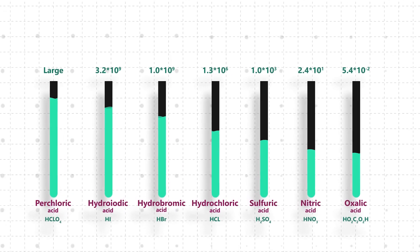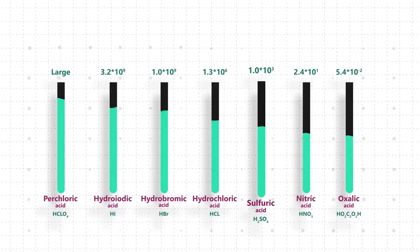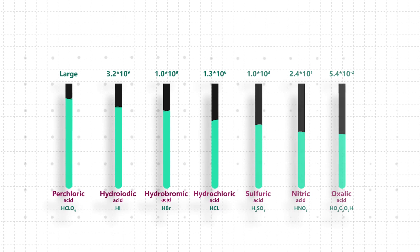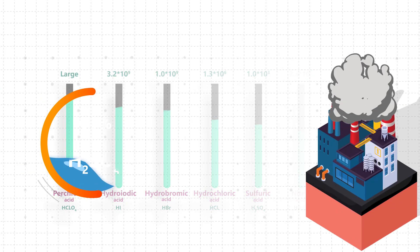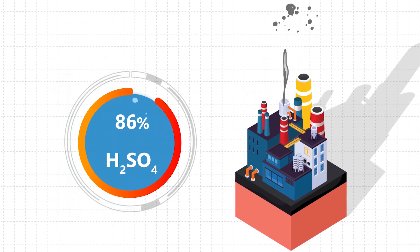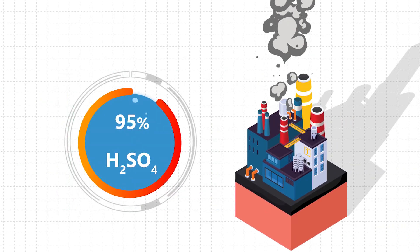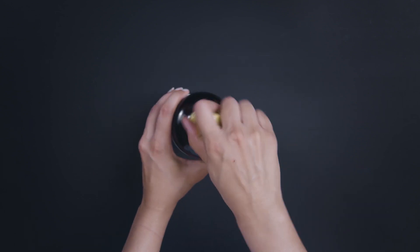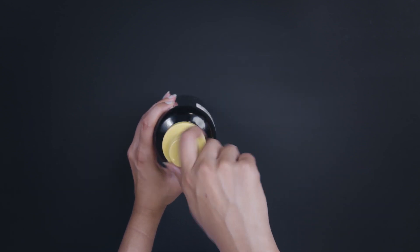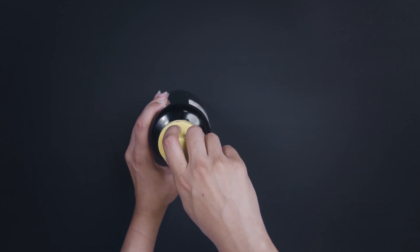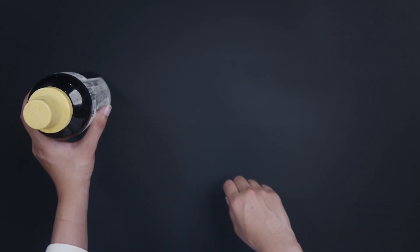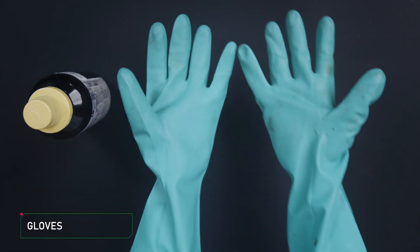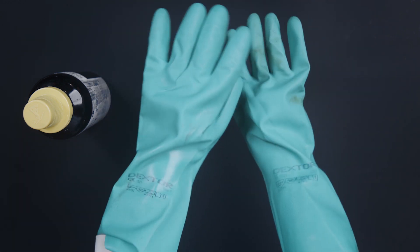So why is sulfuric acid called the king of acids when there are far more powerful acids? It's because sulfuric acid is produced in large quantities and almost every manufactured item in the world comes in contact with this acid at some stage. So now that we're done with the nerdy stuff, it's time to get our hands dirty.